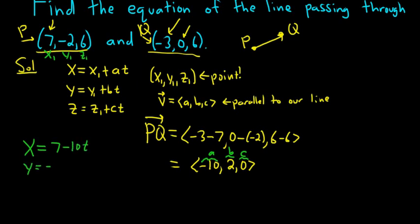The next one would be negative 2 plus 2t, because b is 2. And the last one would be z equals 6. And that's it, because it's going to be 0t. So we just leave it. And that would be it.